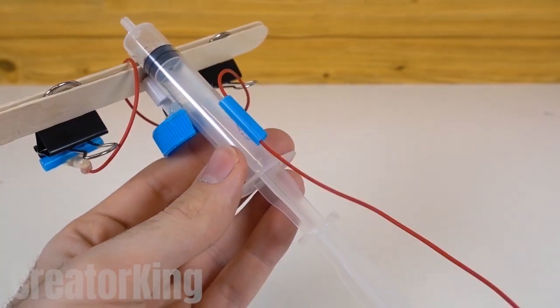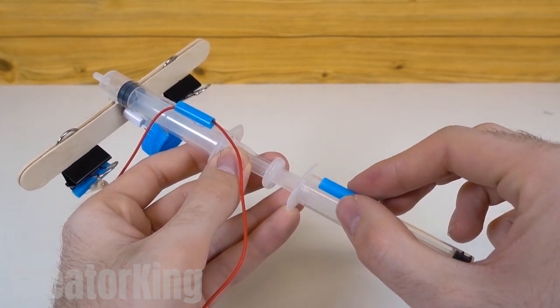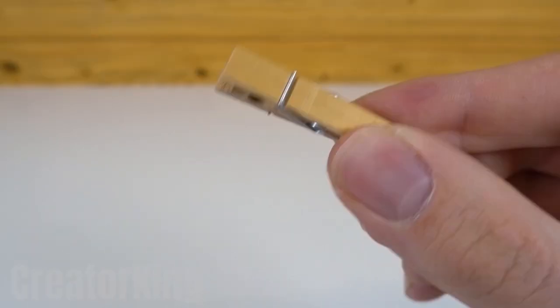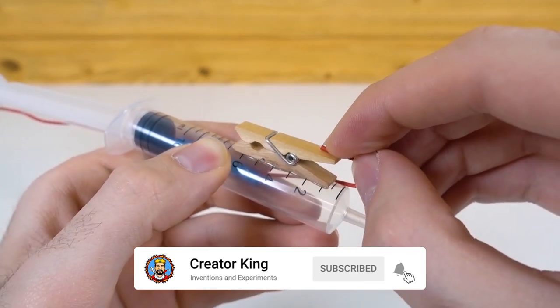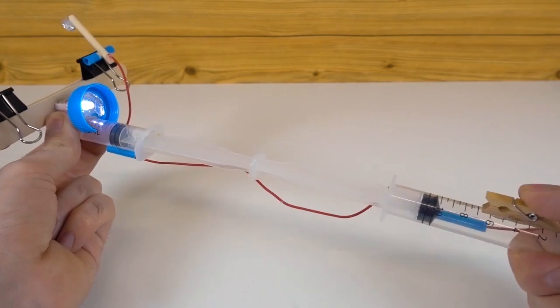Then insert one of the supports that we glued at the beginning into the structure. Pass the cable through the straw we just glued and place another syringe body on the opposite support. Use a clothespin to activate the buttons to take the picture. After attaching it to the syringe, glue the cable to it and test that it does what it's supposed to do. Ready? Now!